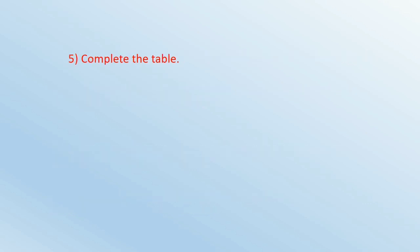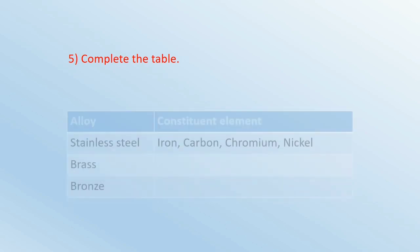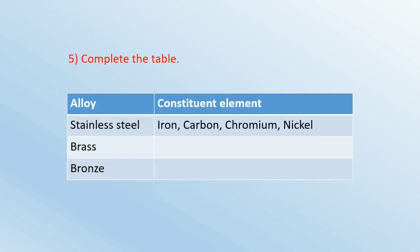Question number 5: Complete the table. The table has alloys and constituent elements. For example, Stainless steel has constituent elements Iron, Carbon, Chromium and Nickel. So Brass has constituent elements Copper and Zinc. And Bronze has constituent elements Copper and Tin.